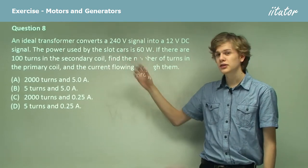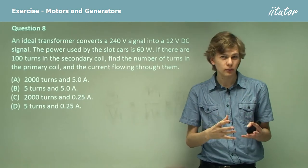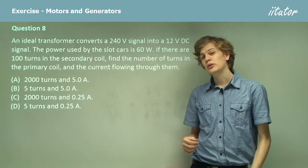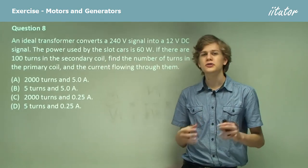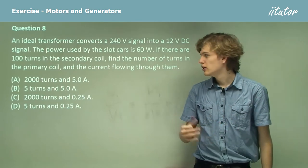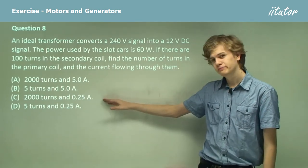So if we have a very large signal being transformed into a small signal, that means that there's going to be a large number of turns in the primary coil and a small number of turns in the secondary coil, so our choice is either A or C.